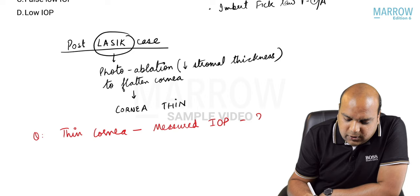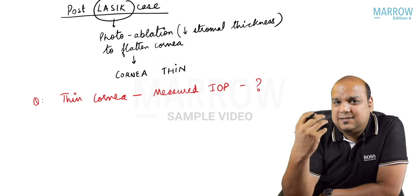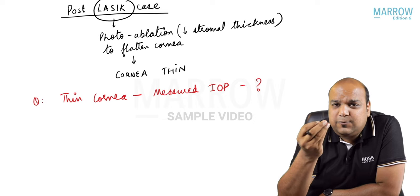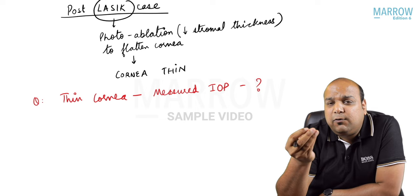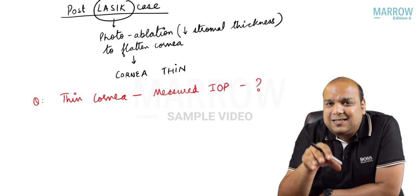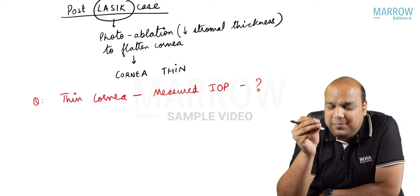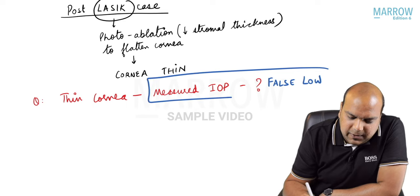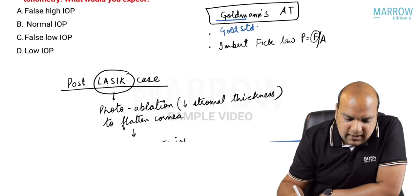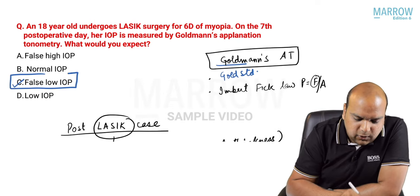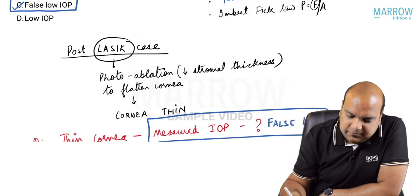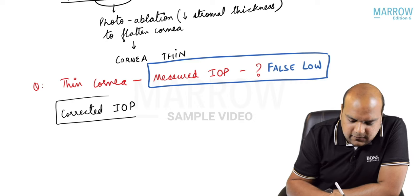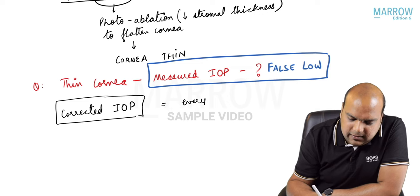IOP itself will remain the same - this is an extraocular surgery, not changing the actual IOP. The question is: what happens to the measured IOP? If the cornea is thin, the force applied to applanate will be lesser; if the force applied is lesser, the measured pressure will be lower. So the answer is false low IOP.